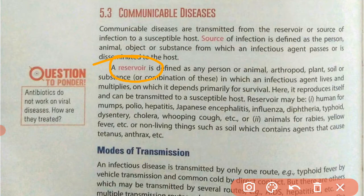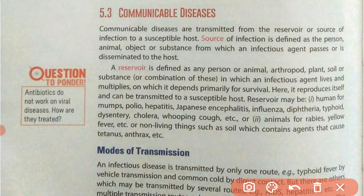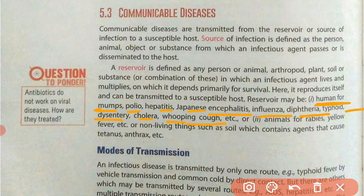The reservoir is the place where pathogens live and multiply. For example, humans are the reservoir for the pathogens of mumps, polio, hepatitis, Japanese encephalitis, influenza, diphtheria, typhoid, dysentery, cholera, and whooping cough. The pathogens of these diseases live in the bodies of human beings, where they also multiply and increase their population.